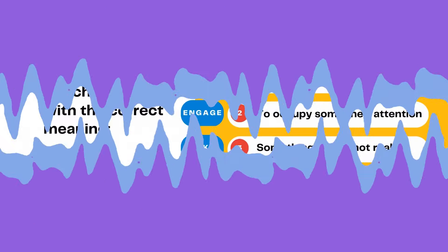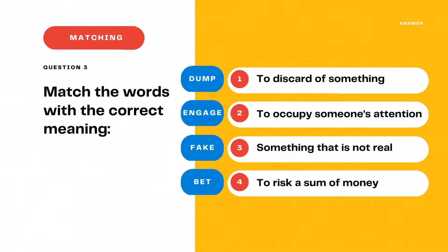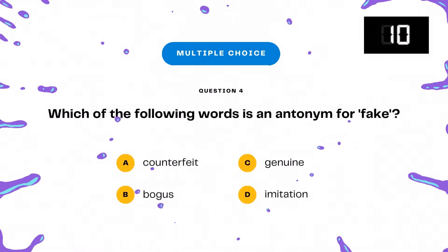Dump indicates to discard something. Engage describes to occupy someone's attention. Fate can describe something that is not real. Thumb indicates to discard of something. Engage describes to occupy someone's attention.